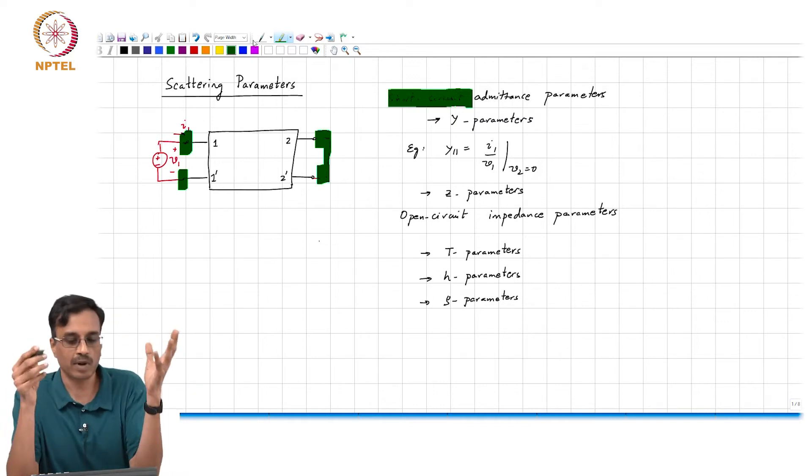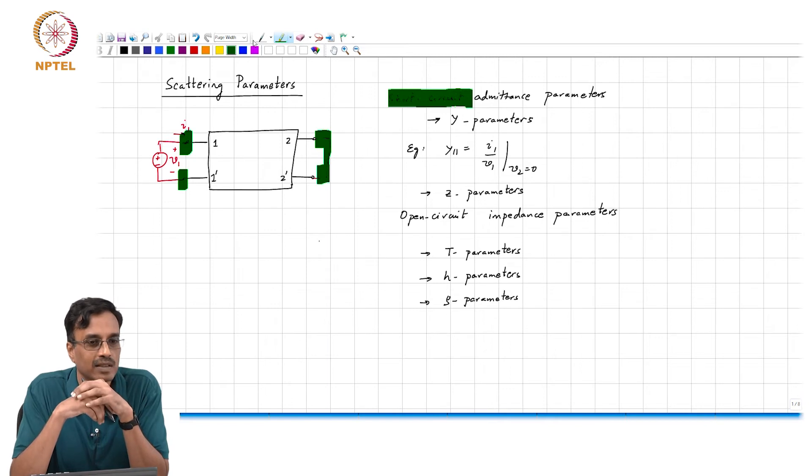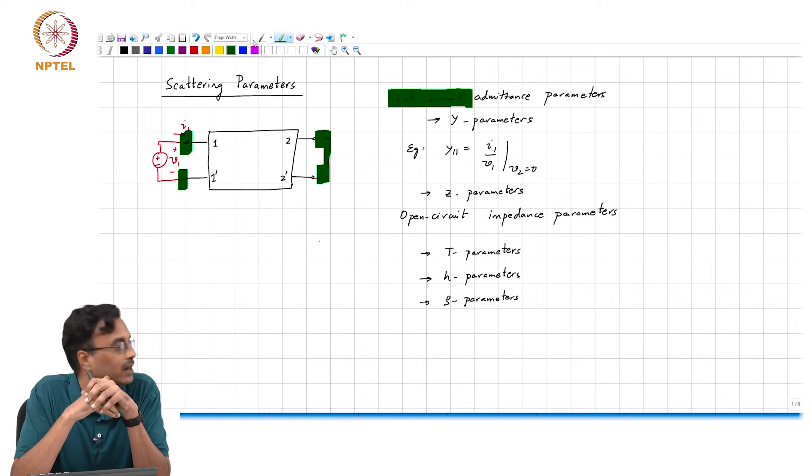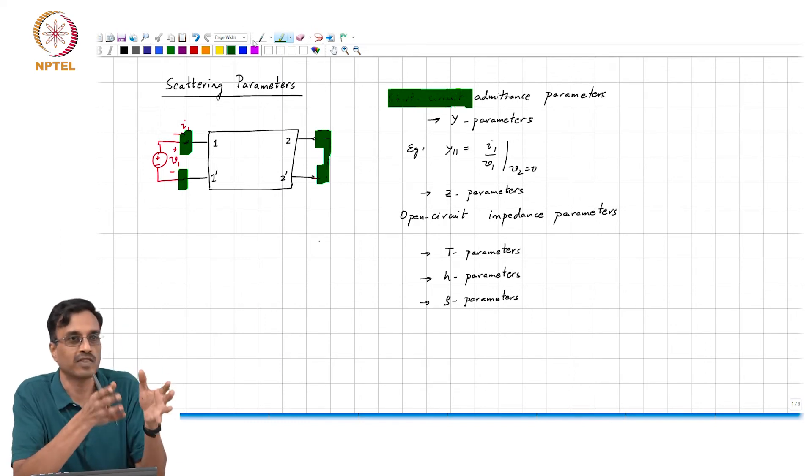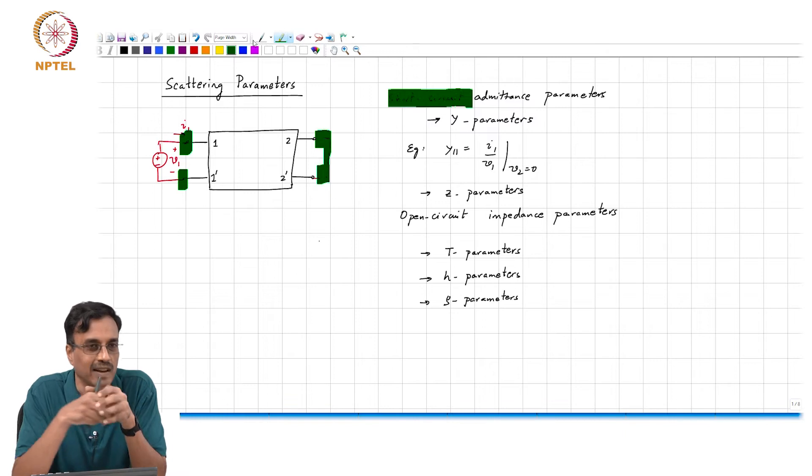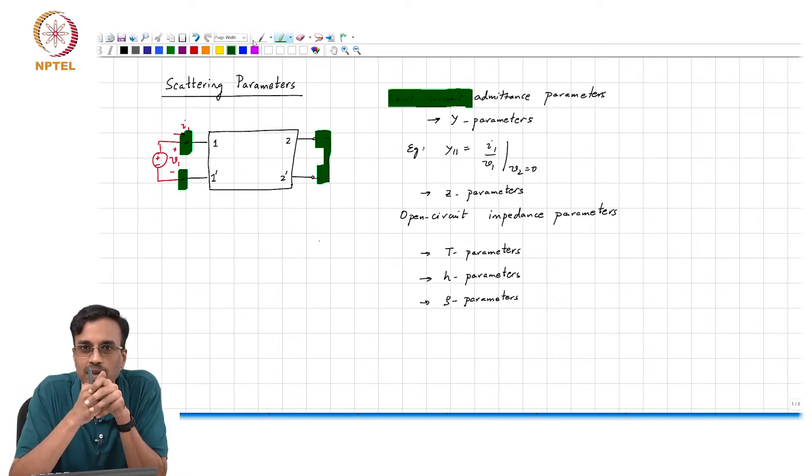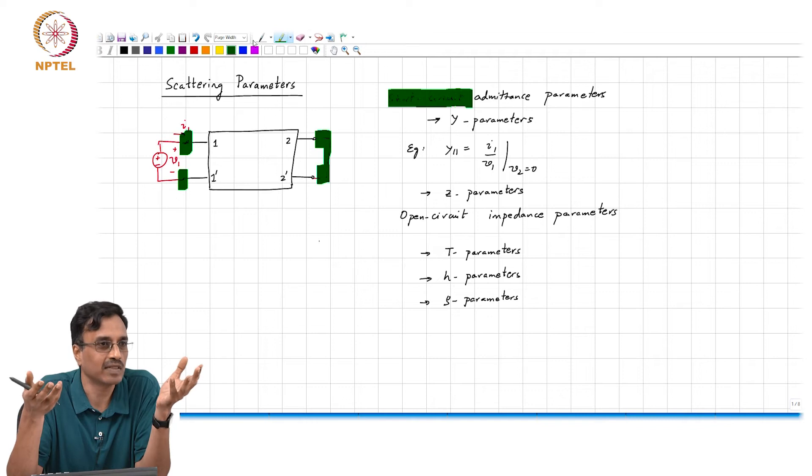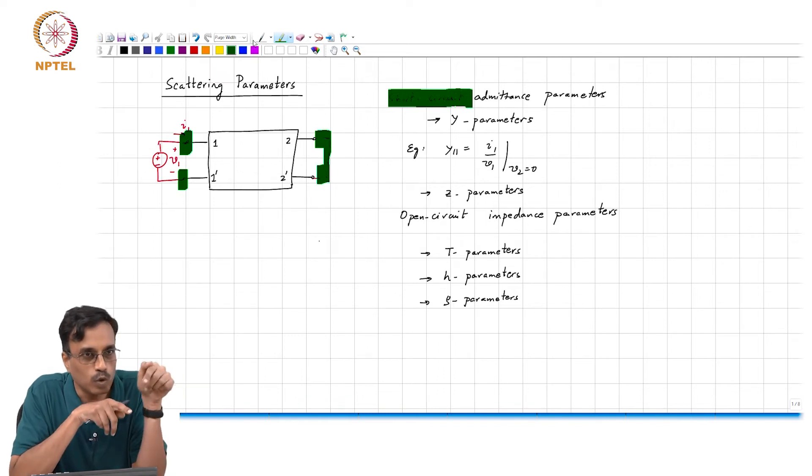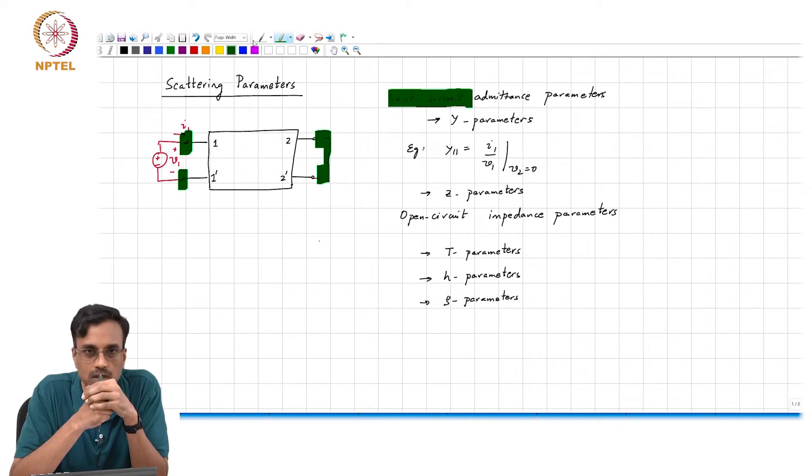Likewise, the short circuit at port 2 means that the two terminals 2 and 2 prime are short, right at the port. It is not 2 centimeters away, it is not a foot away, it is not a mile away. And that obviously brings up a whole new set of practical problems.